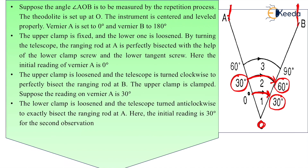This 60 degrees is the final reading of set two and should be the initial reading of set three. We again clamp the upper clamp screw, loosen the lower clamp screw, and turn the telescope clockwise to bisect the ranging rod at A — reading is 60 degrees. For the third set, tighten the lower clamp screw, loosen the upper, and turn clockwise to bisect ranging rod at B. The angle is 90 degrees. Three repetitions in face left are now complete.